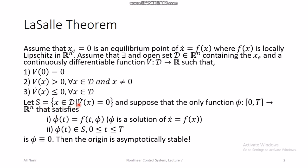To apply LaSalle, you gather all the points in Rⁿ where V̇ = 0 and call that set S. Within those points, you apply the constraints of the set to the ODE x̄ = f(x). If the only solution satisfying both the constraints of S and the ODE is φ = 0 — that is, the x vector equals zero — then the origin is asymptotically stable.